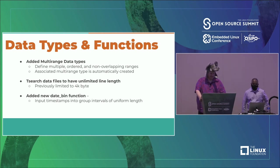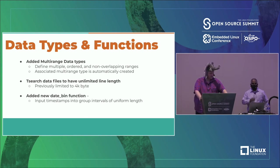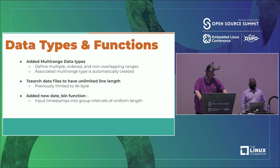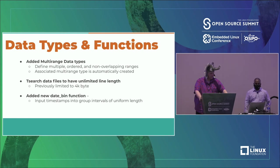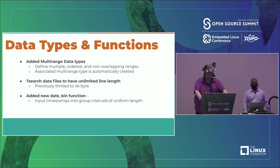Data types and functions: a new multi-range data type has been added, allowing you to define multiple ordered and non-overlapping ranges, with an associated multi-range type automatically created alongside it. T-Search data files now have unlimited line length — previously it was limited to four kilobytes. A new date_bin function was also added, which groups timestamps into groups of intervals of uniform length.